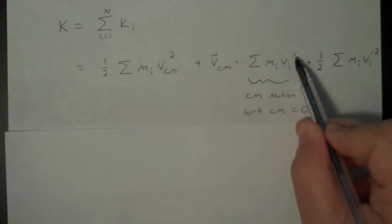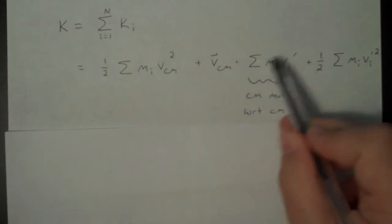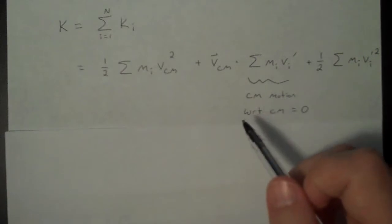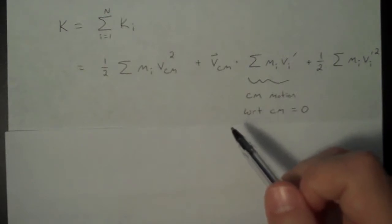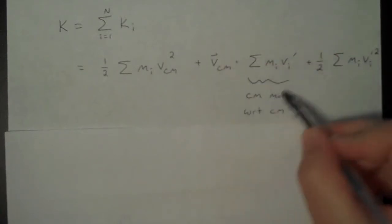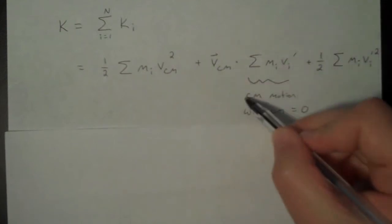But the prime indicates it's the relative velocity with respect to the center of mass. So what this part is, it's really the center of mass motion measured with respect to the center of mass, which is of course zero. Your speed relative to yourself is zero. You are not moving away from yourself. Your speed with respect to yourself is always zero. So this means that this whole term goes away.